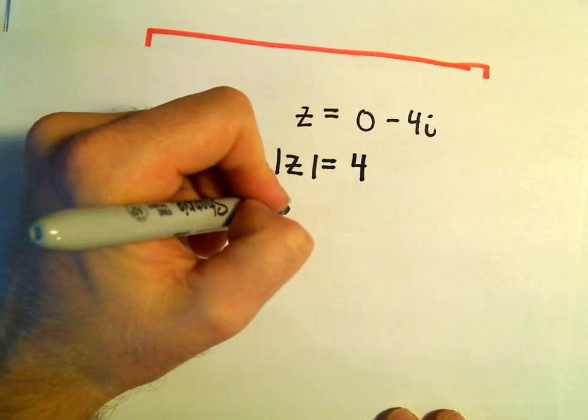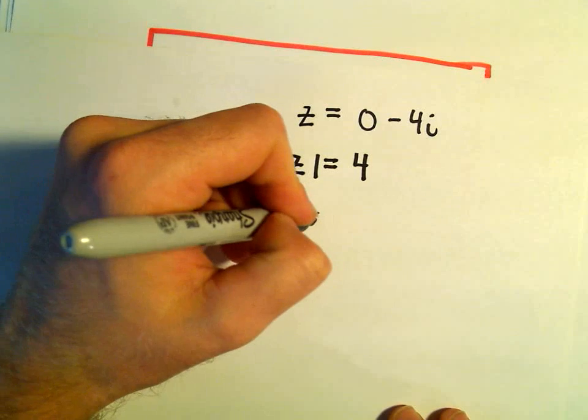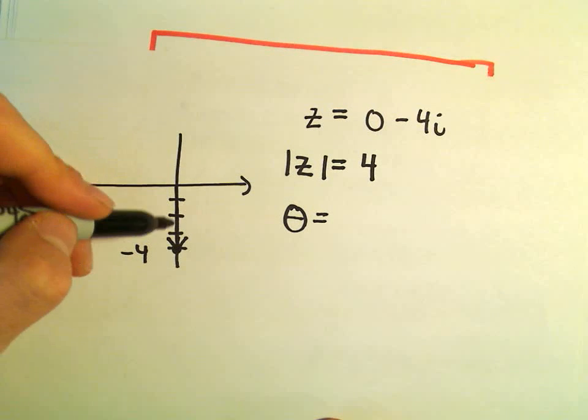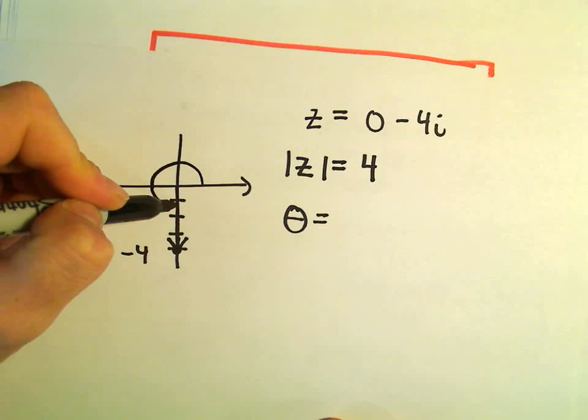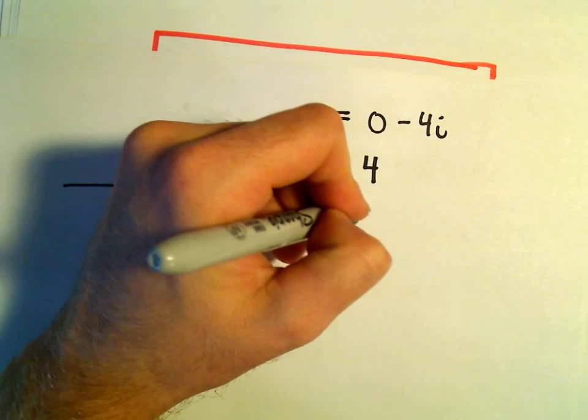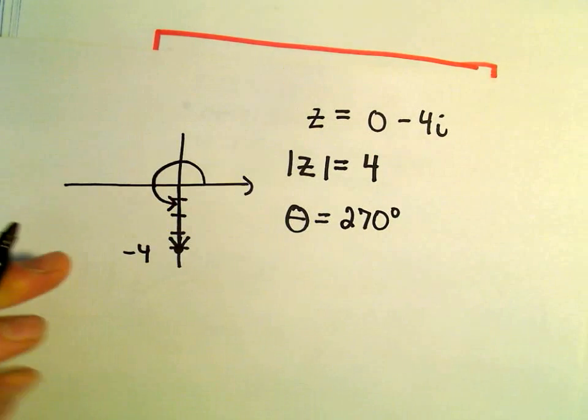Okay, likewise, I think theta is pretty easy to come up with since it's sitting here on the negative y-axis. So halfway would be 180, another 90, we would be sitting at 270 degrees.